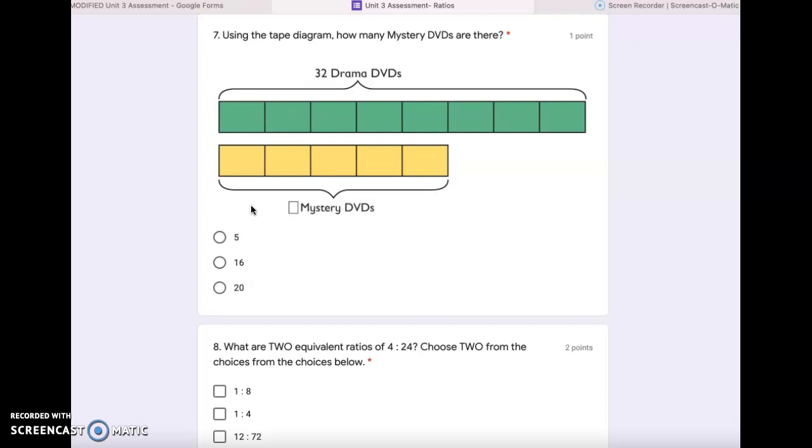Number 7. Using the tape diagram, how many mystery DVDs are there? 5, 16, or 20?